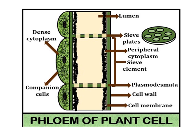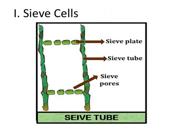Here in the figure you can also see the companion cells that contain the dense cytoplasm. The sieve plates contain the sieve pores. Here in the figure you can also see the peripheral cytoplasm. Peripheral cytoplasm is the cytoplasm when the sieve tube becomes mature — they have a large central vacuole, due to which the cytoplasm moves towards the periphery and becomes thin-layered; that is why we call it peripheral cytoplasm.